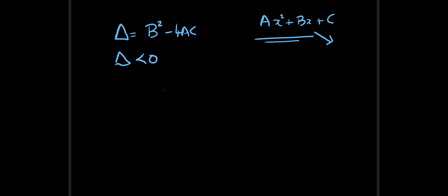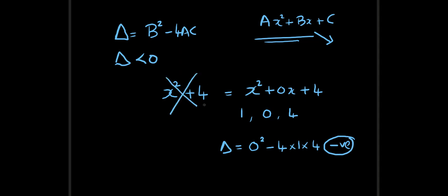I will show you one example: x square plus 4. That's exactly what I wrote previously. This is actually x square plus 0x plus 4. So here we have a, b, and c as 1, 0, and 4. So the discriminant is equal to b square minus 4 into 1 into 4. Clearly that's negative. And if the discriminant is negative, the quadratic cannot be factorized into real factors.